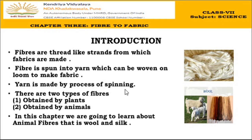Fibers are of two types: plant fiber and animal fiber. Plant fibers we get from plants, and animal fibers we get from animals. In this chapter we are going to learn about animal fibers — specifically two: wool and silk.